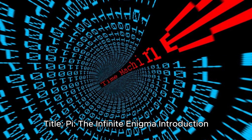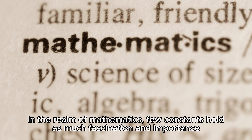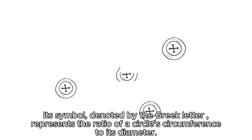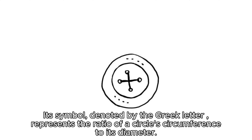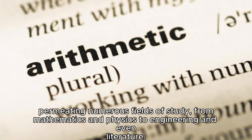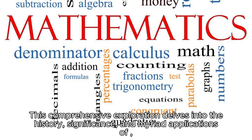Pi: The Infinite Enigma. In the realm of mathematics, few constants hold as much fascination and importance as the irrational number often simply referred to as Pi. Its symbol, denoted by the Greek letter, represents the ratio of a circle's circumference to its diameter. This seemingly simple concept belies the immense depth and complexity that Pi embodies, permeating numerous fields of study from mathematics and physics to engineering and even literature.